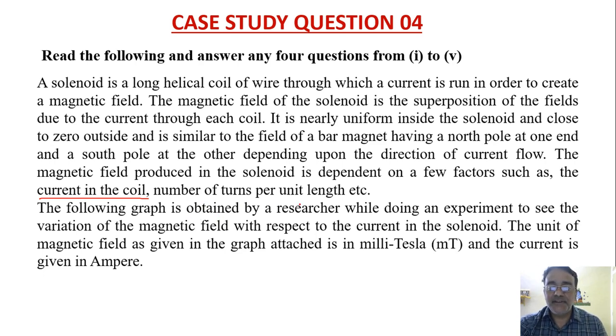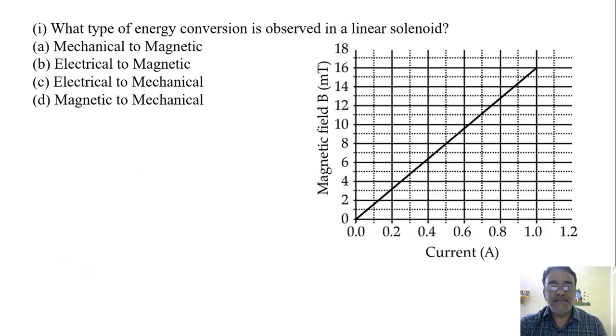And the number of turns per unit length. The following graph is obtained by a researcher while doing an experiment to see the variation of magnetic field with respect to current in the solenoid. The unit of the magnetic field as given in the graph attached is in milli tesla, that is mT, and the current is given in ampere. So this is the graph and now we have to give the answers of the questions based on the context given.